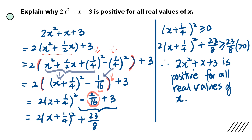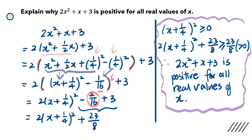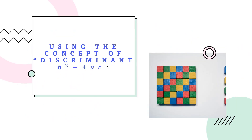From these three examples, you can see that for such a question where you need to explain or show something, the skill to apply is to convert the given function into a completed square format, and then do some explanation — that explanation part is the same for all three questions. In some questions, you may not be able to apply the completing the square method. For such questions, you will have to resort to using another method: the concept of the discriminant, finding the value of b squared minus 4ac.